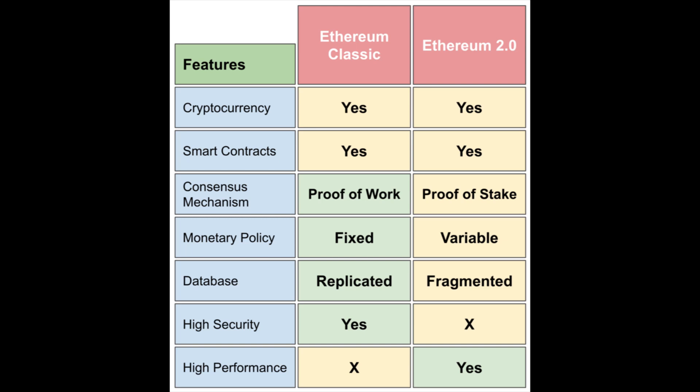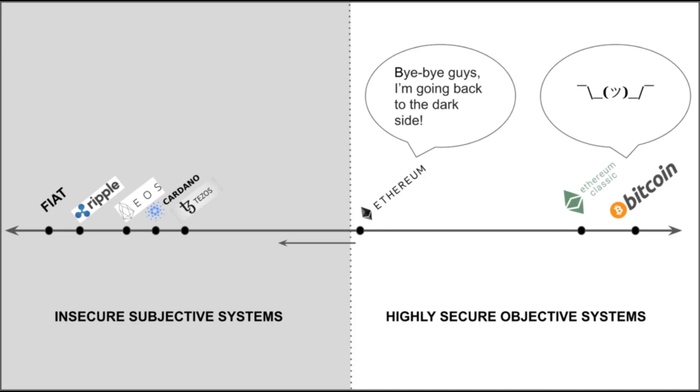For this reason, Ethereum 2.0 will no longer compete with gold like Bitcoin and Ethereum Classic, but instead it will compete with fiat. You'll also notice that Ethereum Classic has a replicated database, while Ethereum 2.0 has a fragmented database. This is yet another security sacrifice Ethereum makes for efficiency. In ETC, the blockchain database is stored in every node of the network, while Ethereum will be fragmenting the database into smaller groups of nodes through a process called sharding. Here is an illustration of Ethereum's move away from high security over to high performance.